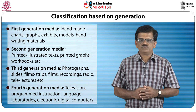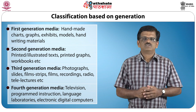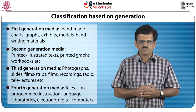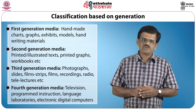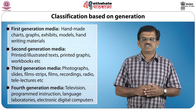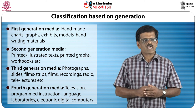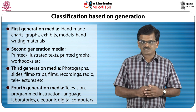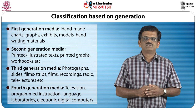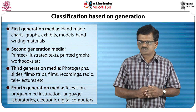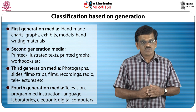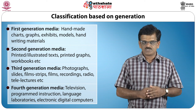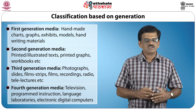The third way of classifying audiovisual aids is based on their generation. The UNESCO bulletin on new methods and techniques in education distinguishes four generations of educational media. The first generation includes handmade charts, graphs, exhibits, models and handwriting materials. The second generation includes printed and illustrated texts, printed graphs and workbooks. The third generation includes photographs, slides, film strips, films, recordings, video, radio and tele-lectures. The fourth generation includes television, programmed instruction, language laboratories, and electronic and digital computer-based multimedia.